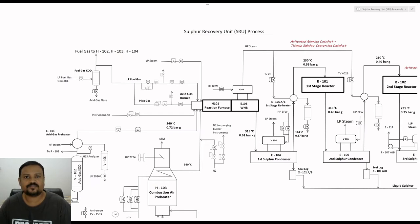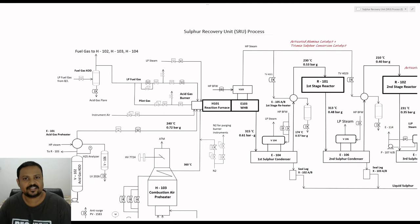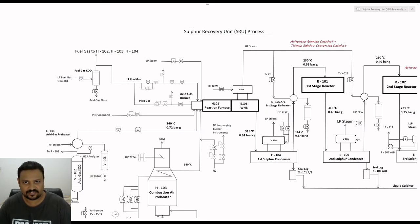The SRU plant is comprised of two units: the SRU and the DGTU, which is known as the tail gas treatment unit. About 94% of the sulfur will be recovered in the SRU unit and the remaining 5.9% will be recovered in the tail gas treatment unit. The SRU plant employs the modified Claus process, which is the industrial standard for all SRU plants operating worldwide. It is basically a two-step process: the first step is the thermal combustion step which takes place inside the reaction furnace, and the second step is the catalytic conversion step which takes place inside the Claus reactor.